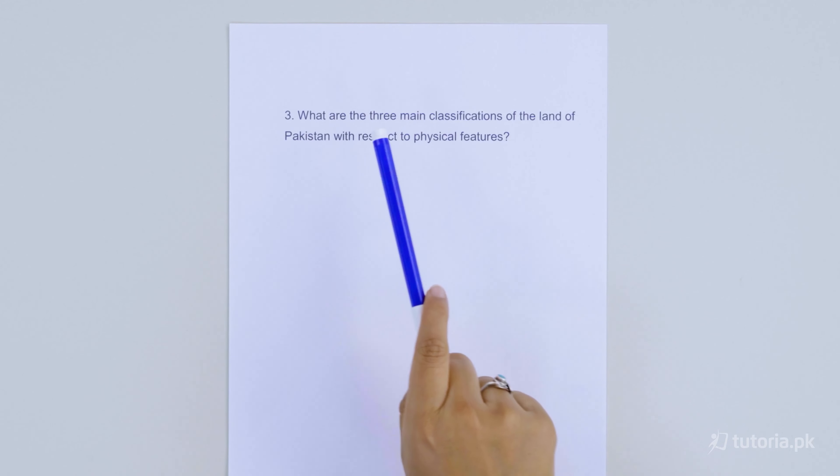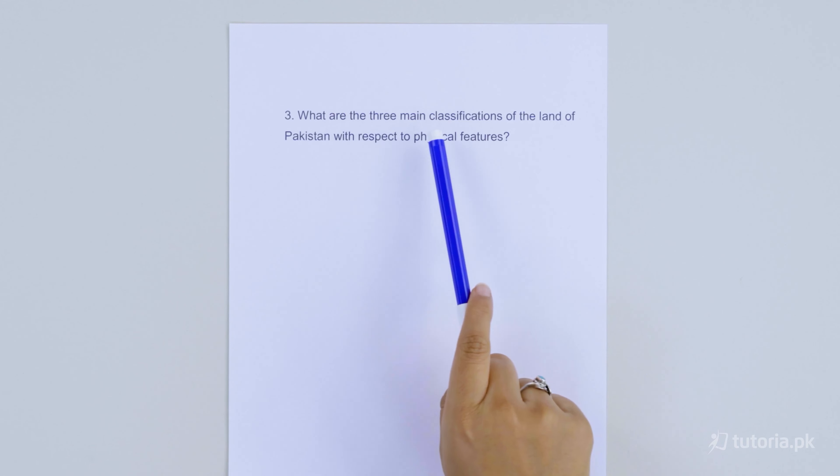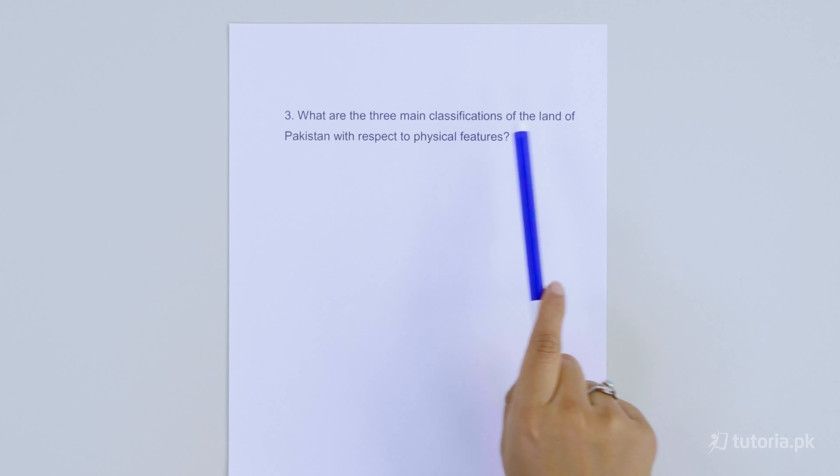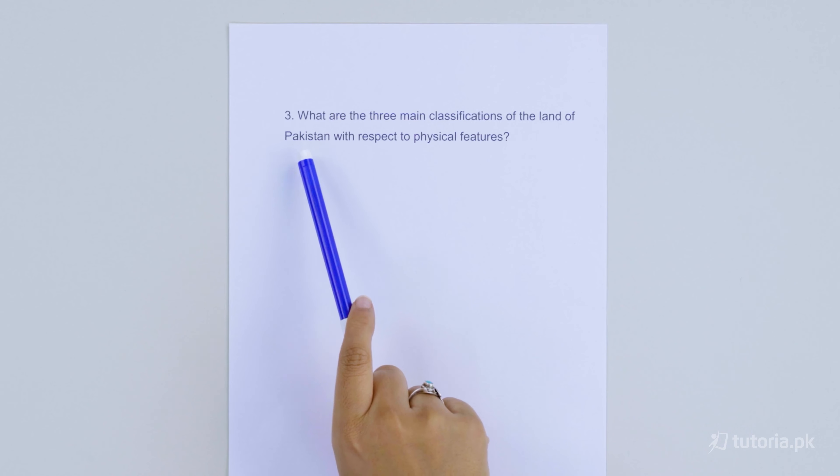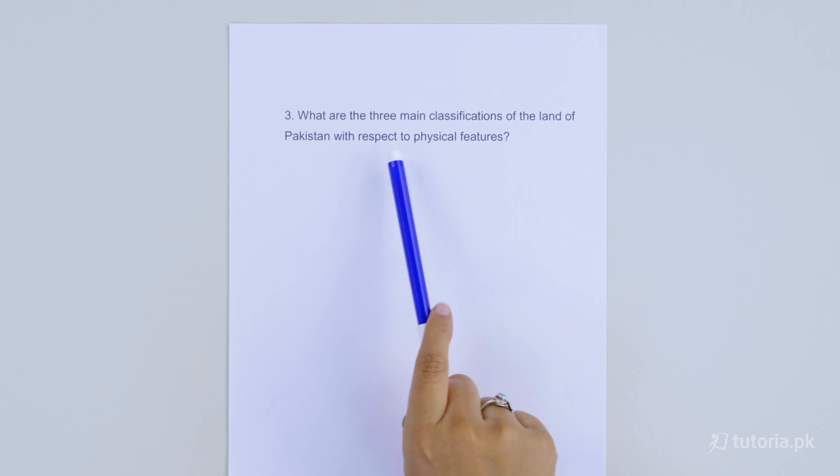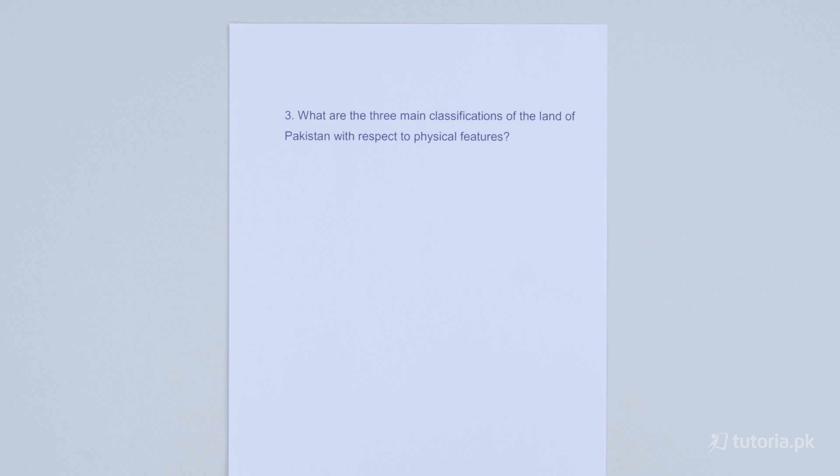What are the three main classifications of land of Pakistan with respect to physical features? First of all, you have to explain this answer and write that physically Pakistan is located in an area where all strata of land can be simultaneously observed.